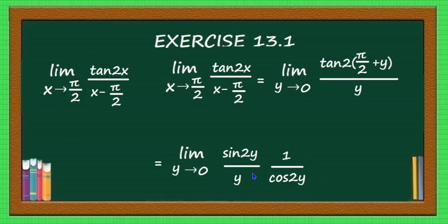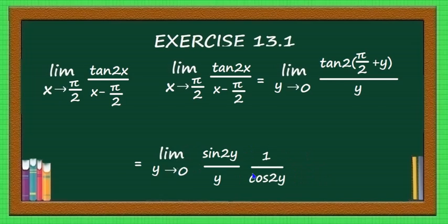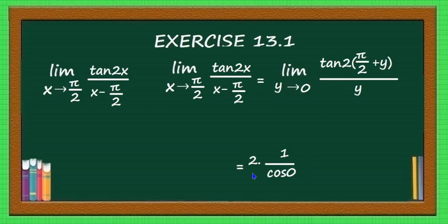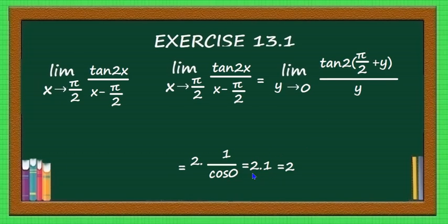The limit evaluates to 2, because limit y→0 of sin(2y)/y equals 2. For the second part, putting y equal to 0 gives 1/cos(0). Since cos(0) = 1, that is 1/1 = 1. So the final answer is 2 times 1, which equals 2. That is the answer for this problem.